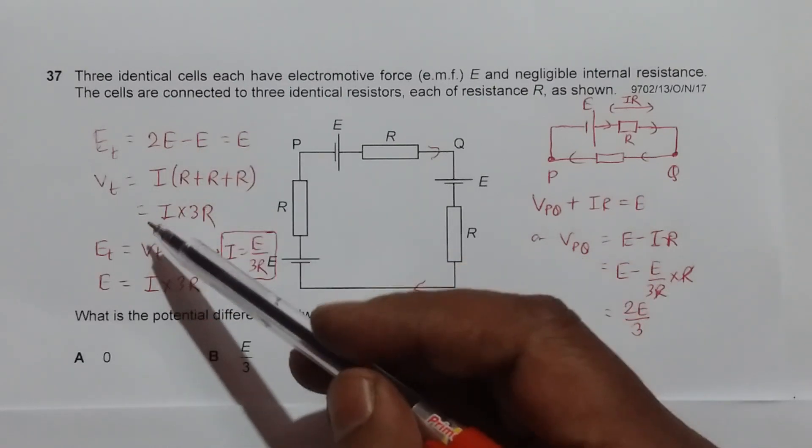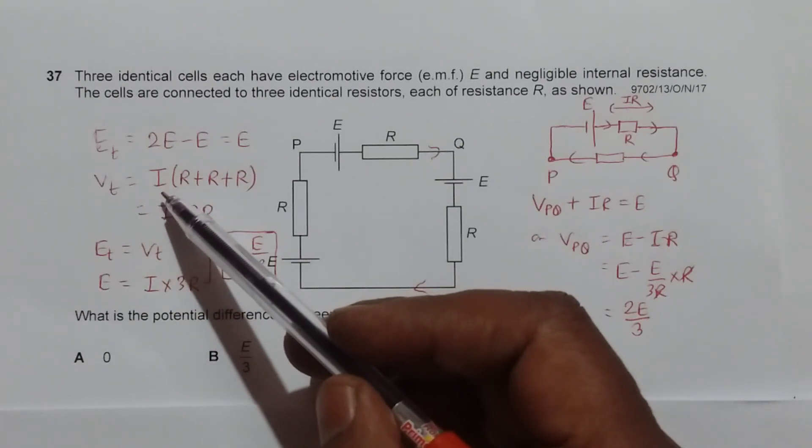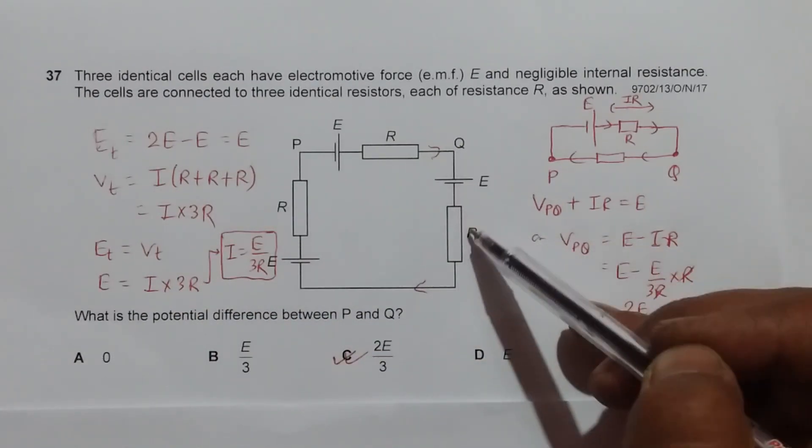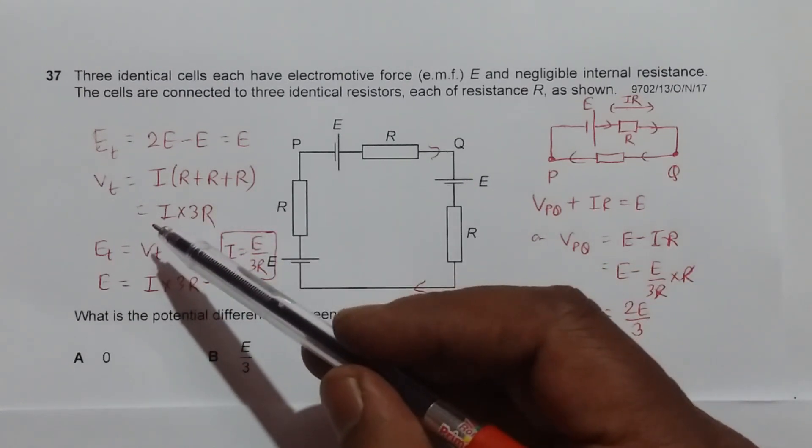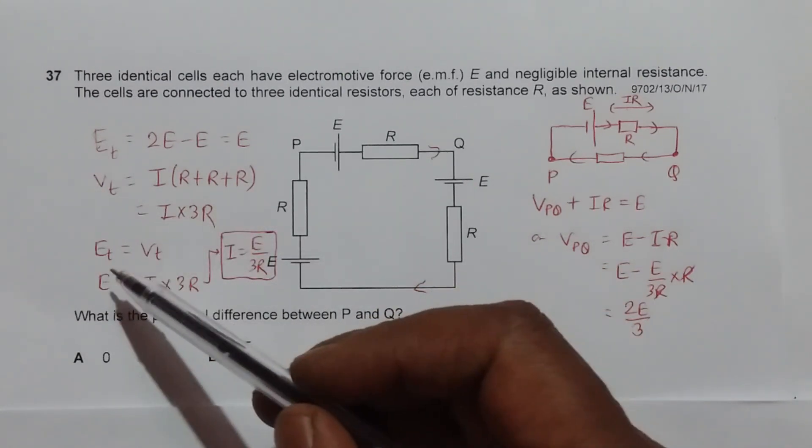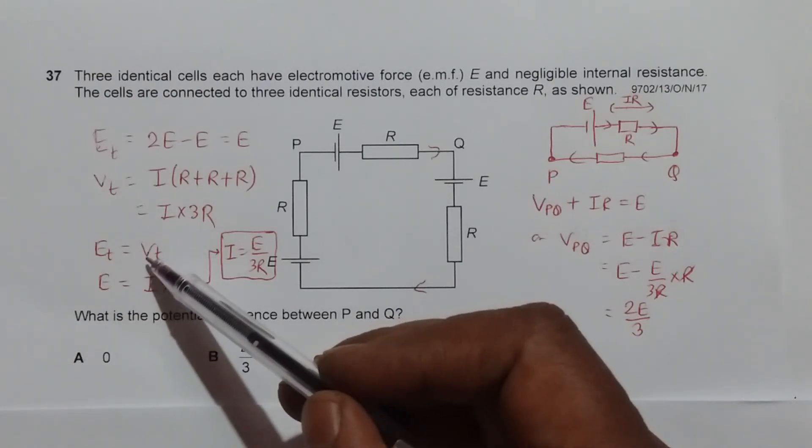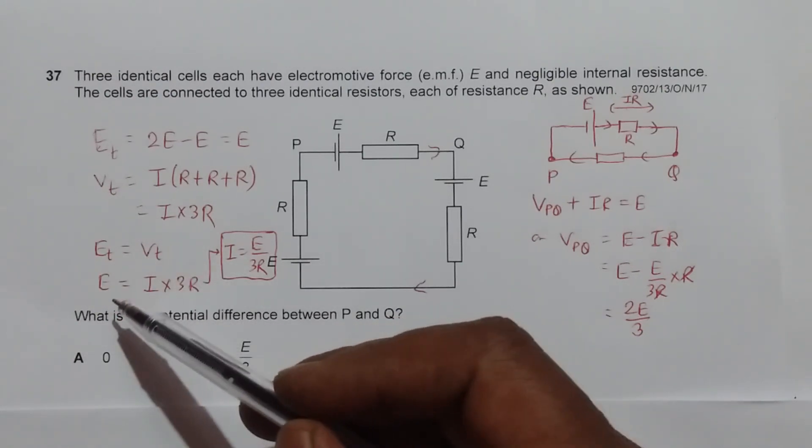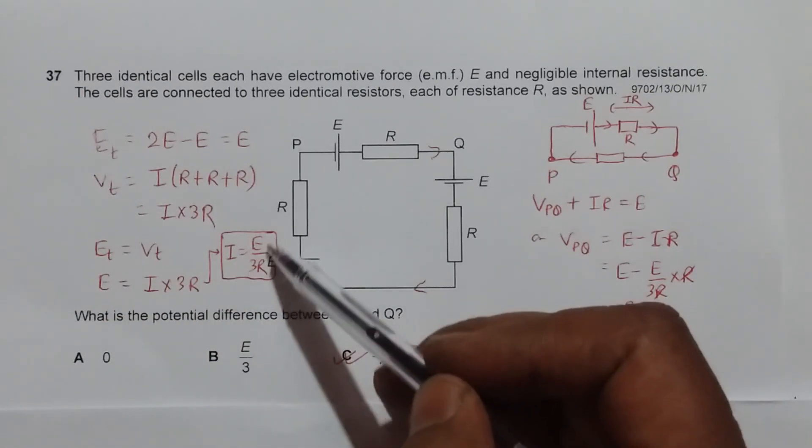The total PD here will be equal to the current I into the series arrangement of these three resistors: R plus R plus R, which gives us I into 3R. From Kirchhoff's law, we have E total equal to the total potential difference, so E is equal to I into 3R, and I is equal to E by 3R.